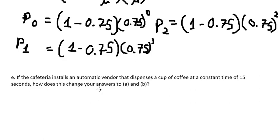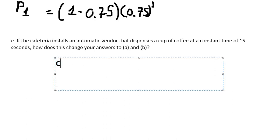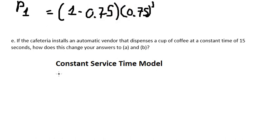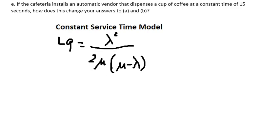For the last question, we know we are using an automatic vendor, so we have constant service time. This is the constant service time model. The formula for Lb is lambda squared over 2 times mu times (mu minus lambda).